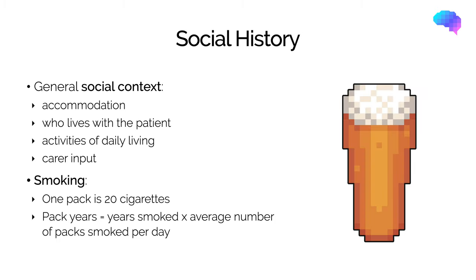Moving on to social history, it's important to explore the patient's social context and identify potential respiratory risk factors. You should ask about their accommodation, who they live with, their personal support network, activities of daily living, what tasks they can carry out independently, what assistance they require, and whether they have any carer input.